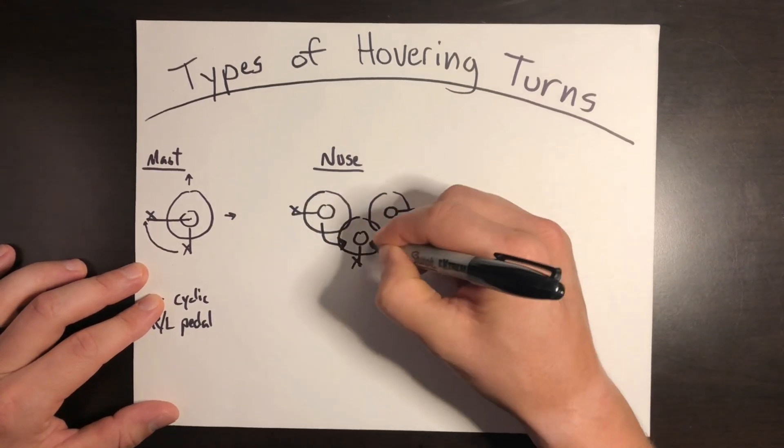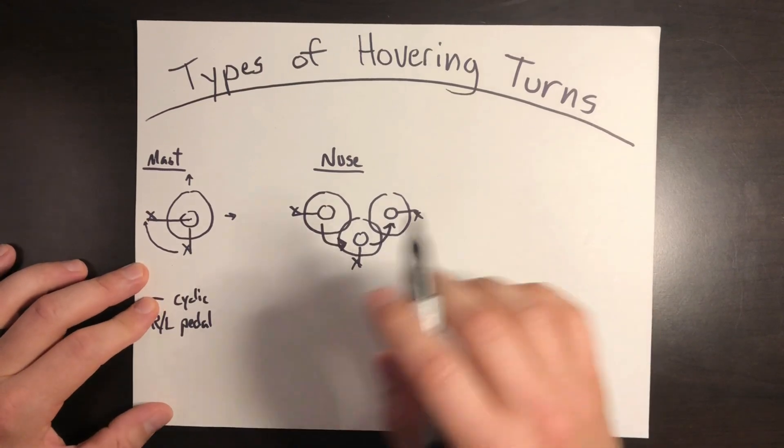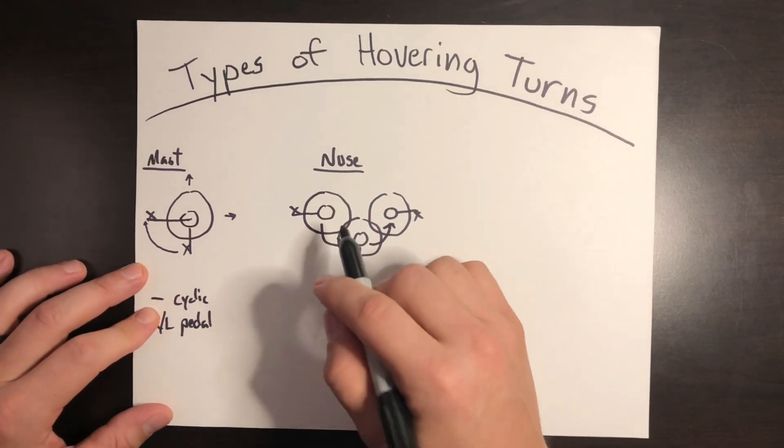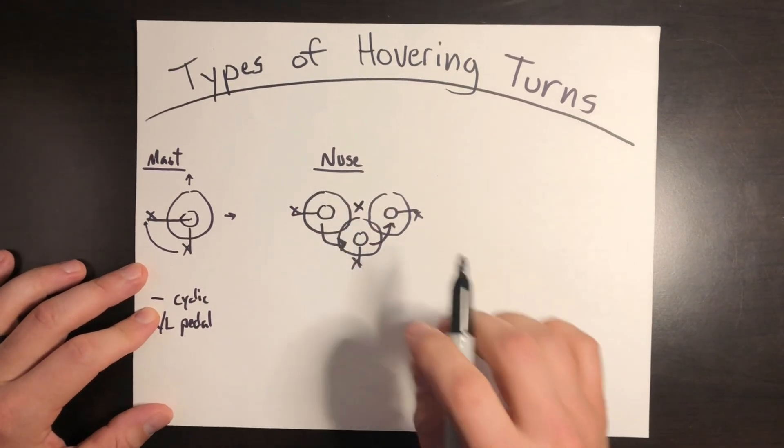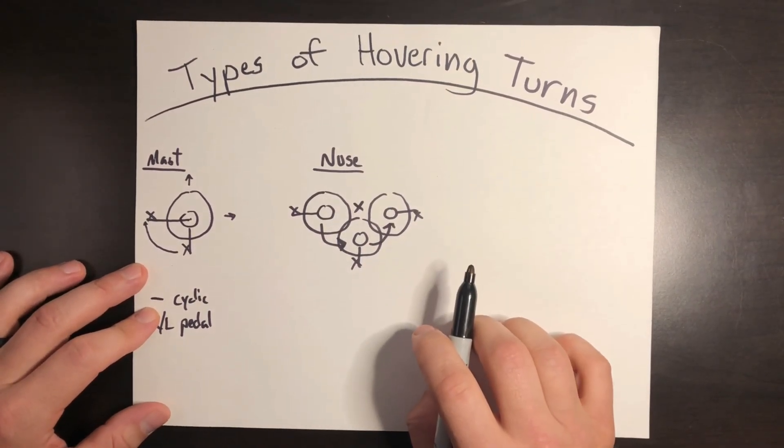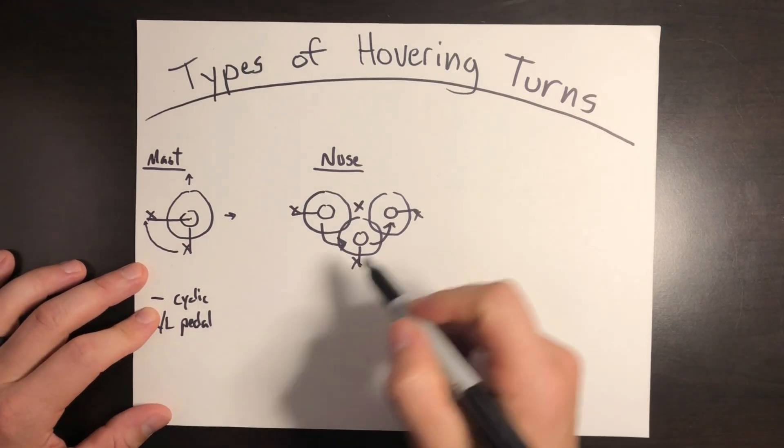I'm changing from this to this. I can do 90 degrees, 180 degrees, whatever I want. But in this type of maneuver, the nose stays in a fixed position, generally right there, either pivoting off the nose or just a point slightly in front of the nose.